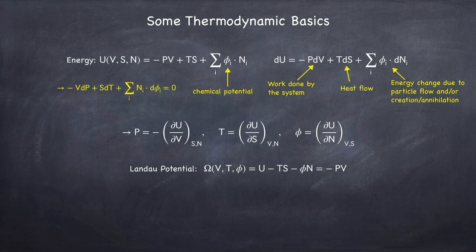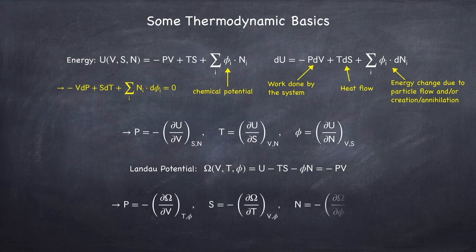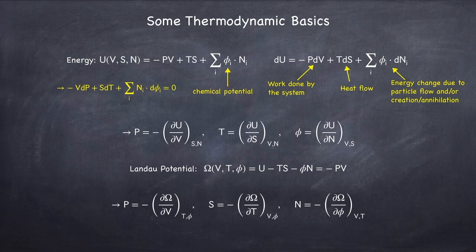We can now read off the following quantities from this definition of the potential. The pressure will be the negative partial derivative with respect to volume while holding temperature and chemical potential constant. The entropy will be the negative partial derivative with respect to temperature while holding volume and chemical potential constant. And the number of particles, again for a given species, will be the negative partial derivative of the potential with respect to the chemical potential while holding volume and temperature constant.